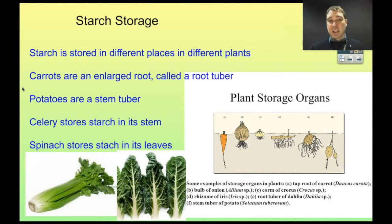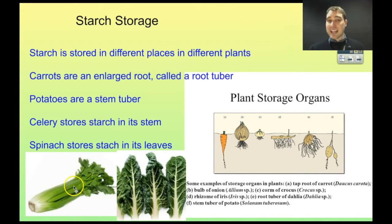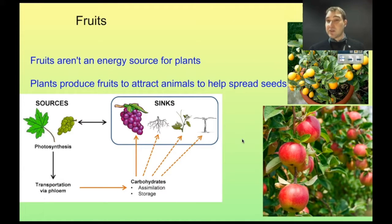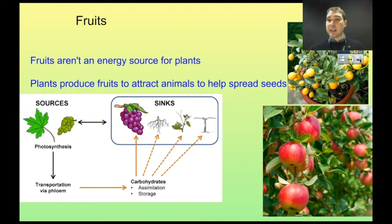Where the starch is stored depends on the plant. Carrots have an enlarged root — this is called a root tuber, and there are many examples of these. Potatoes are another good example of a plant storage organ — potatoes are what's called a stem tuber. In celery, the starch is stored in the stem, which gets enlarged. In spinach, the starch is stored in the leaves. So depending on the plant, you get different areas where extra starch is stored. It's important to note that fruits aren't an energy storage place — fruits are produced by plants to attract animals so that seeds can be dispersed. The plant can send sugar in, but it can't really take sugar back out, so fruits aren't a sugar storage area.